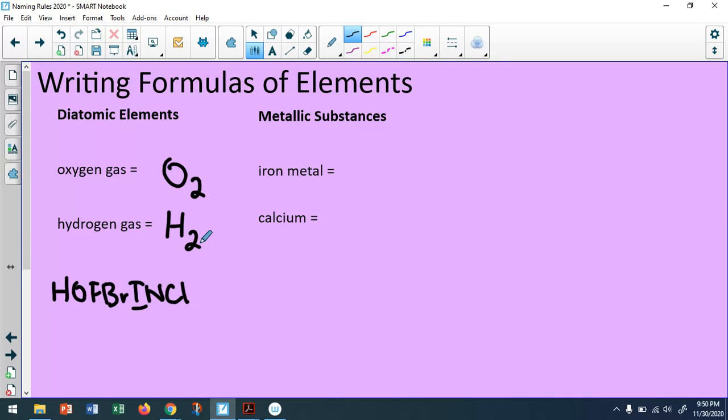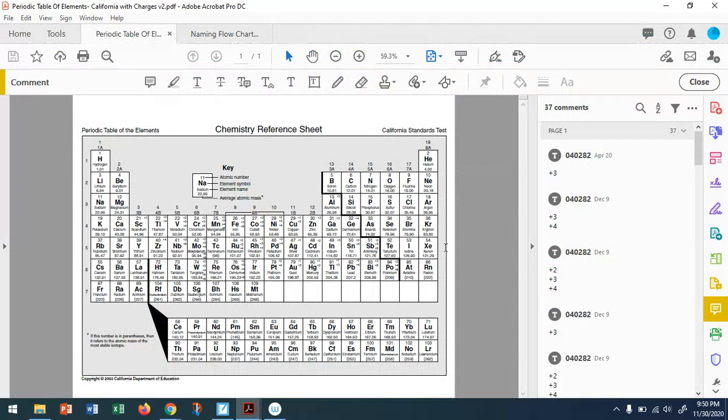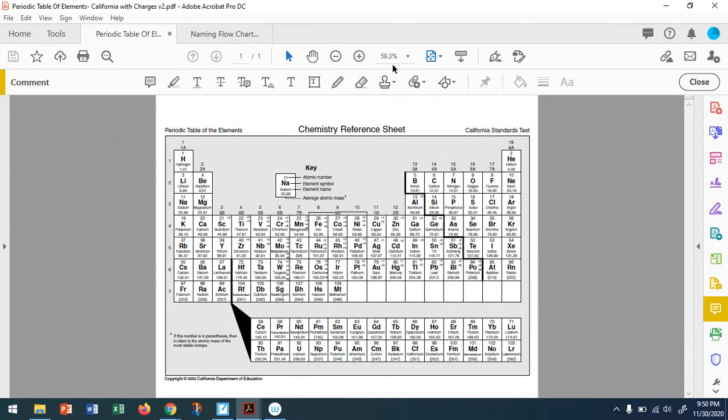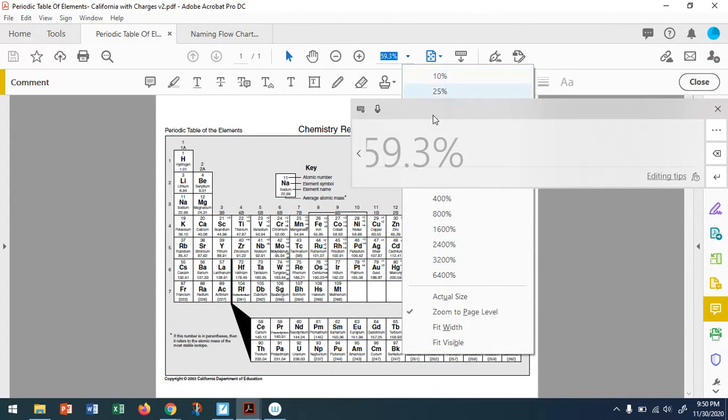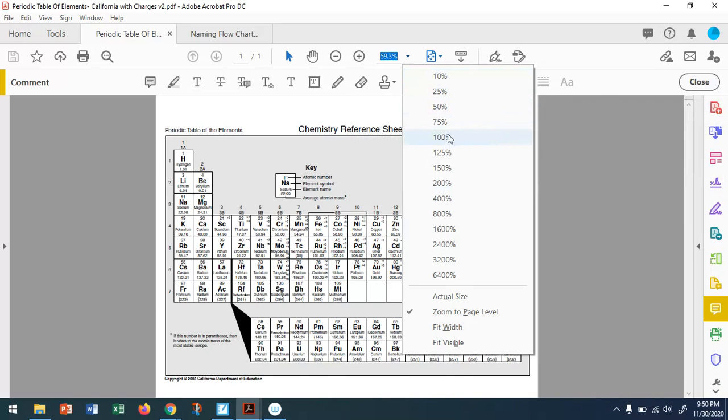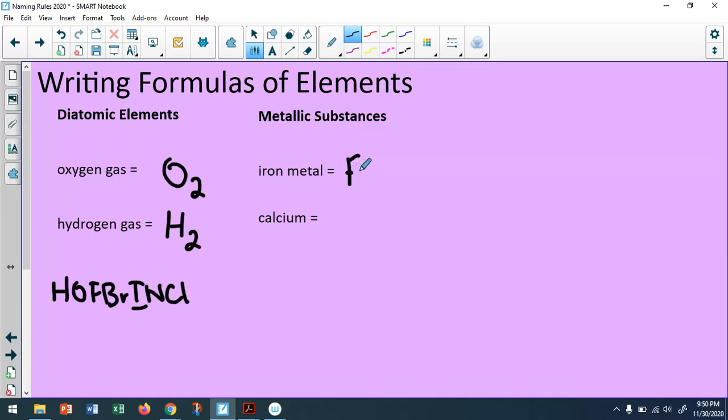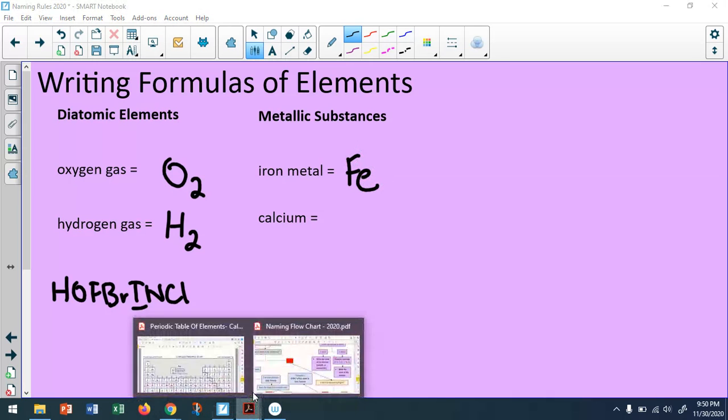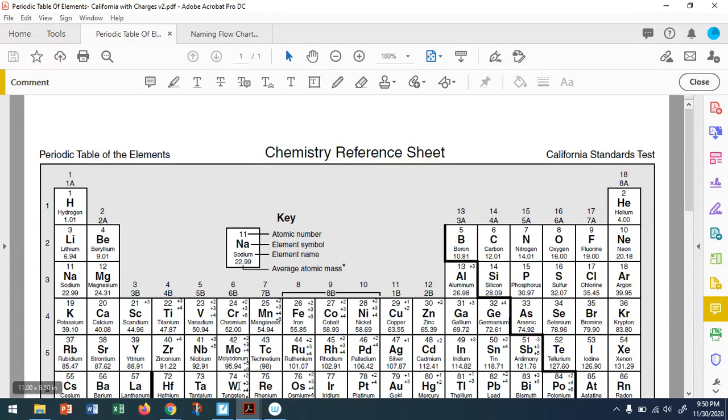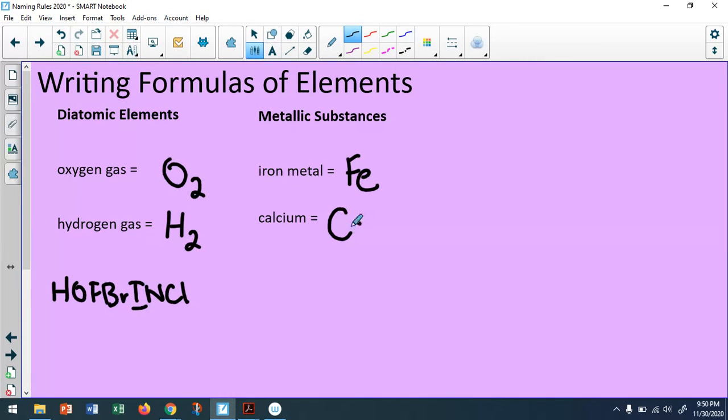Now with the exception of those seven elements, all of the rest of the elements, whether metallic or non-metallic, are going to just be their simple one element. So iron, I take a look at the periodic table. Iron is Fe. So I just write Fe. Calcium, a metal. Ca. I just write Ca. So no multiples, no additionals. It's just, it is what it is. Take the symbol from the periodic table.